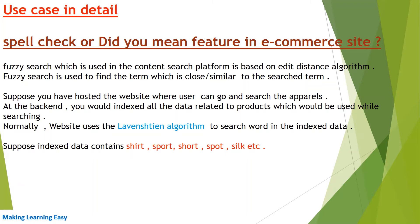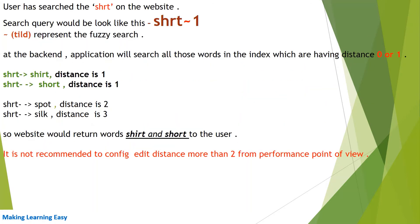Normally the website uses the Levenshtein algorithm to search words in the indexed data. Suppose your index data contains: shirt, short, spot, silk, etc., and the user has searched the term 'shrt' on the website. At the back end, the query would look like: shrt~1. This tilde represents the fuzzy search, which internally uses the Levenshtein distance algorithm, and the '1' represents the distance configured at the back end.